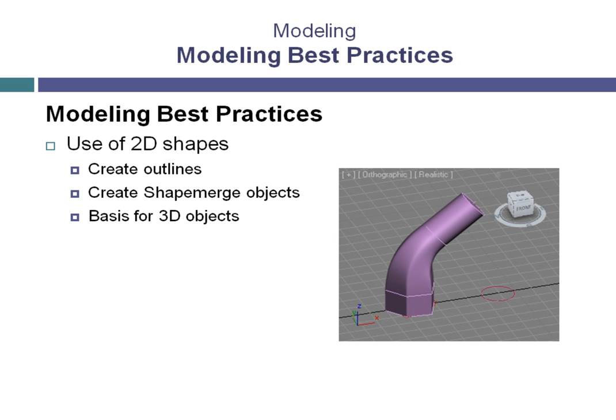Open and closed splines can be used to generate complex three-dimensional shapes by using modifiers such as Bevel and Sweep. They can also be used to create lofted objects, which provide even more flexibility and simplify the creation of more complex three-dimensional objects based on shapes.